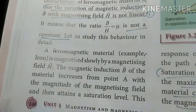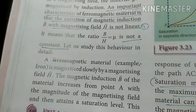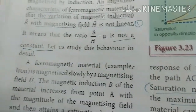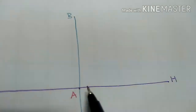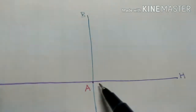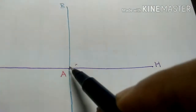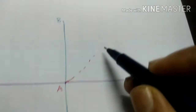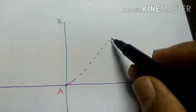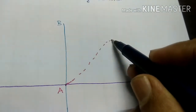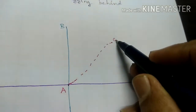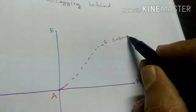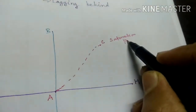Now we are going to take a ferromagnetic material. For example, iron is magnetized by increasing the magnetizing field. The magnet slowly attains maximum magnetization and it reaches a maximum value. That point is C, which is called the saturation point.